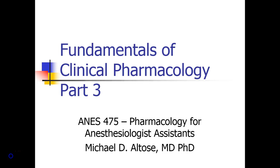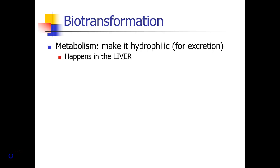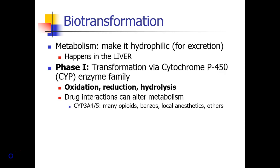Hi, this is Michael Altos, and we are recording Fundamentals of Clinical Pharmacology, Part 3. The next step in pharmacokinetics is biotransformation, which is basically metabolism, and metabolism mostly happens in the liver. One of the main goals of metabolism is to make drugs hydrophilic so they can be excreted in the urine, and this is done by a couple of different processes.